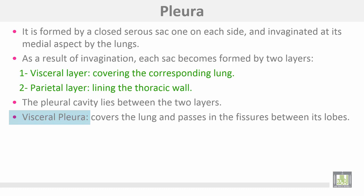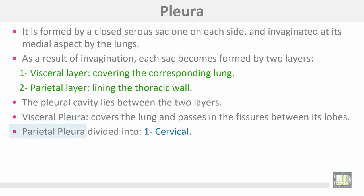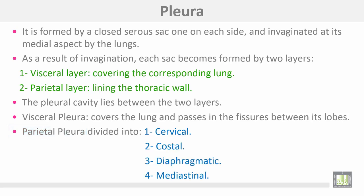The visceral layer covers the lungs and the bases in the fissures between the lobes. Parietal pleura is divided into cervical, costal, diaphragmatic, and mediastinal.